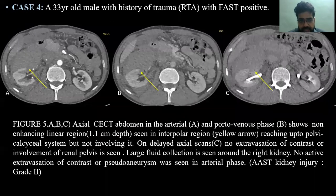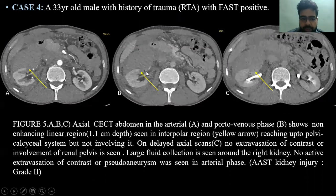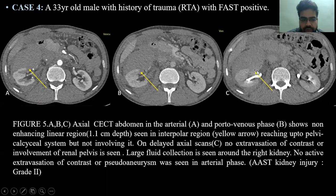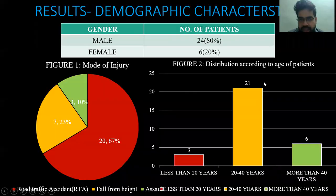Case 4: CECT abdomen in the arterial and portal venous phases shows a non-enhancing linear region of 1.1 cm in depth seen in the inter-polar region of the right kidney, reaching up to the pelvicalyceal system but not involving it. On the delayed scan, there was no extravasation of contrast or involvement of the pelvis. A large fluid collection was seen around the right kidney, with no extravasation of contrast noted. This was graded as AAST renal injury grade 2.